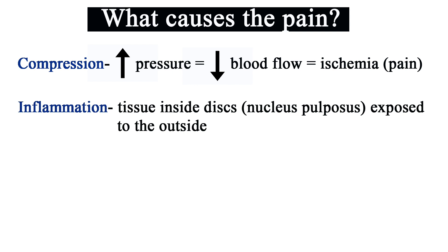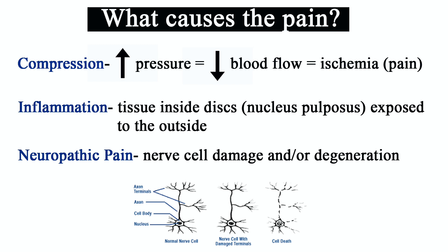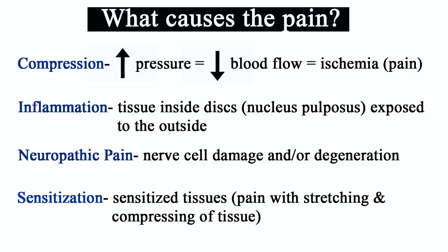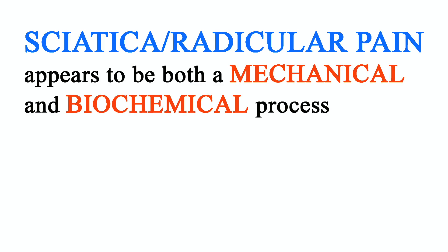However, there are other things going on. That nucleus pulposus, when it exits through the annulus fibrosis, it's foreign to the body and can cause an inflammatory process, which can also cause a large amount of pain. In addition, when that compression lasts long enough on the nerve, it can cause neuropathic pain — basically cell death and degeneration. The inflammatory process also sensitizes the tissues, meaning that when you move through your day, tissues are getting compressed and stretched — normally not painful, but in sensitized tissues this becomes very painful. So it's more than just the disc pressing on the nerve, which is why surgery isn't always the answer.